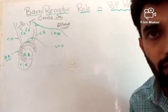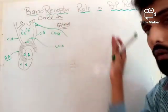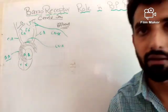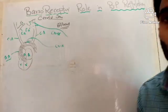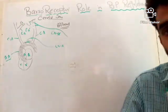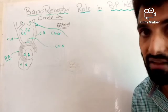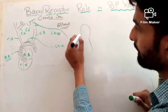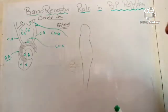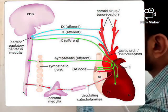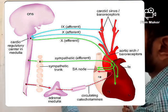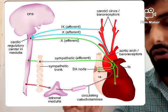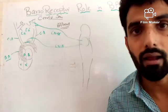Afferent nerve fibers mean they take messages toward the central nervous system, whereas efferent nerve fibers take messages from the central nervous system to the effector organ. So these afferent nerve fibers are responsible for taking messages from the sensory organ to the central nervous system. Cranial nerve 9 and cranial nerve 10 will take messages to the medulla, and the message will be in the form of the frequency of action potentials.